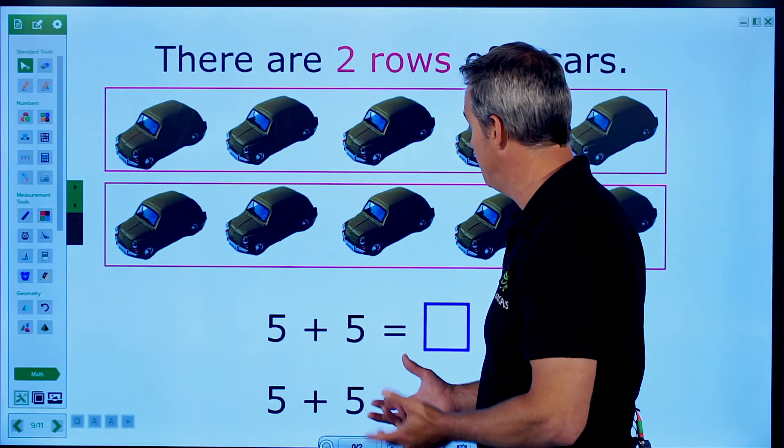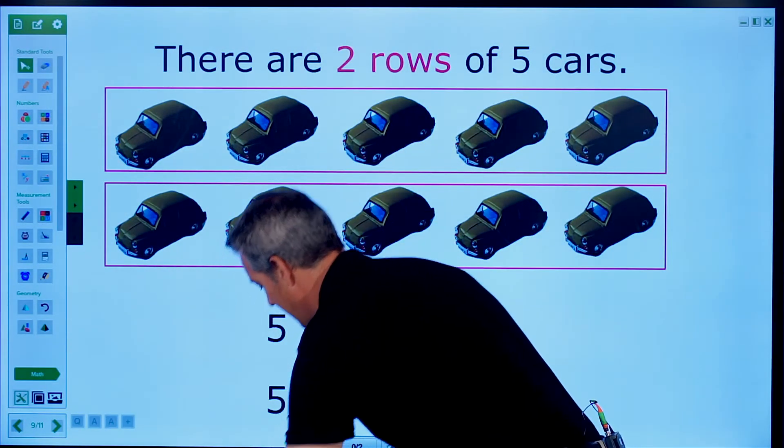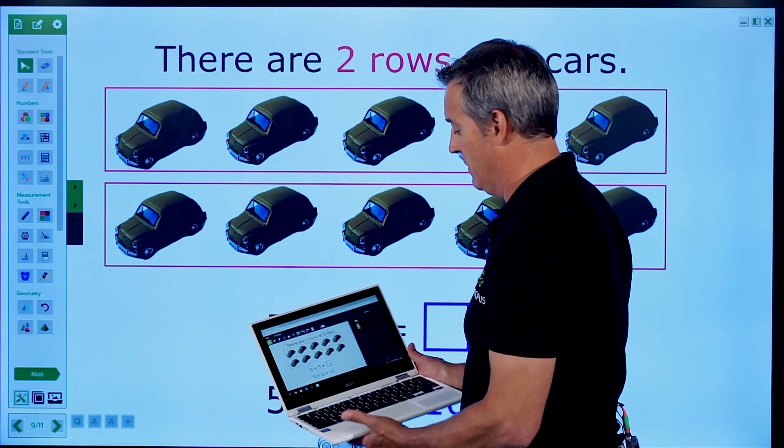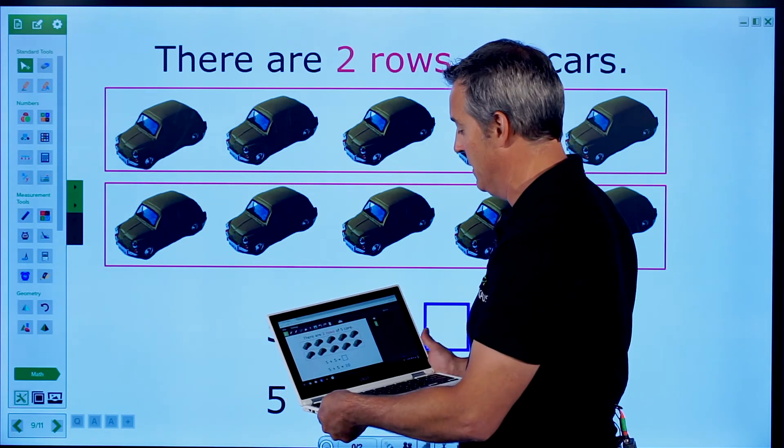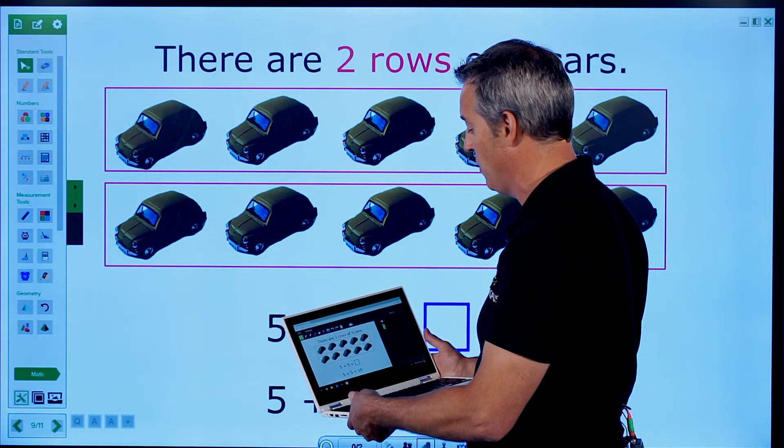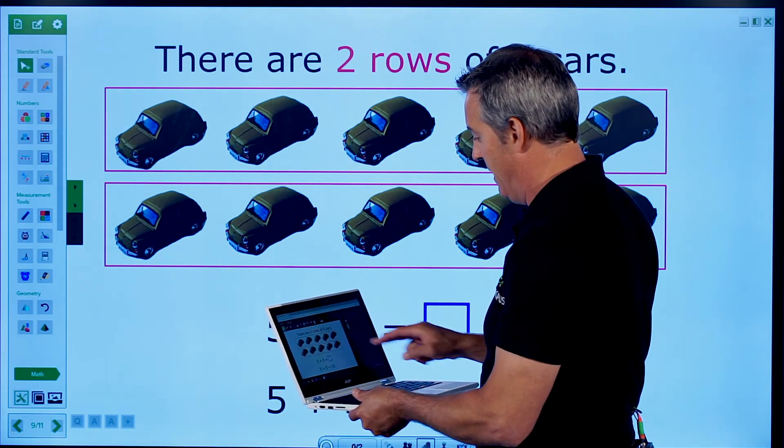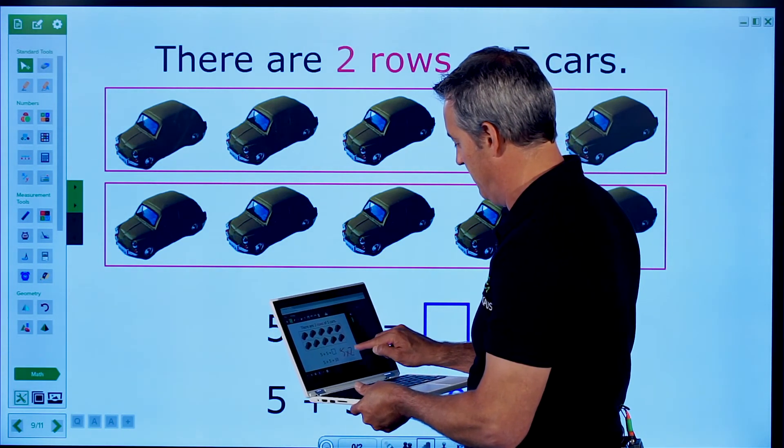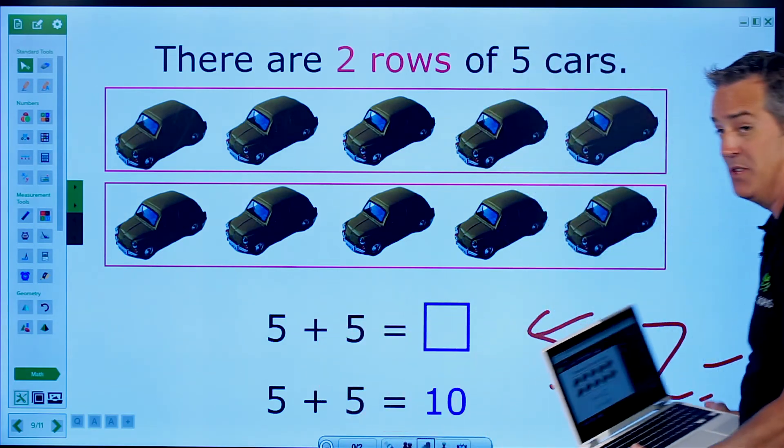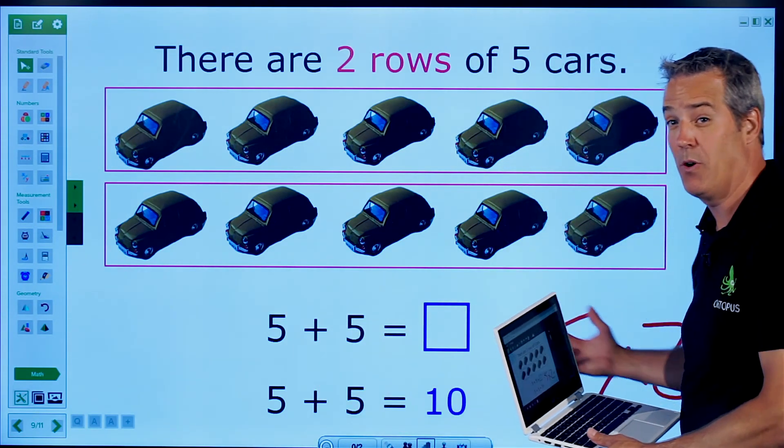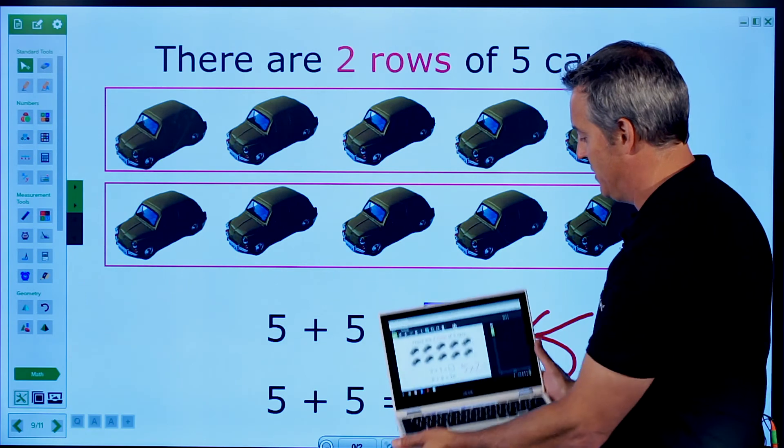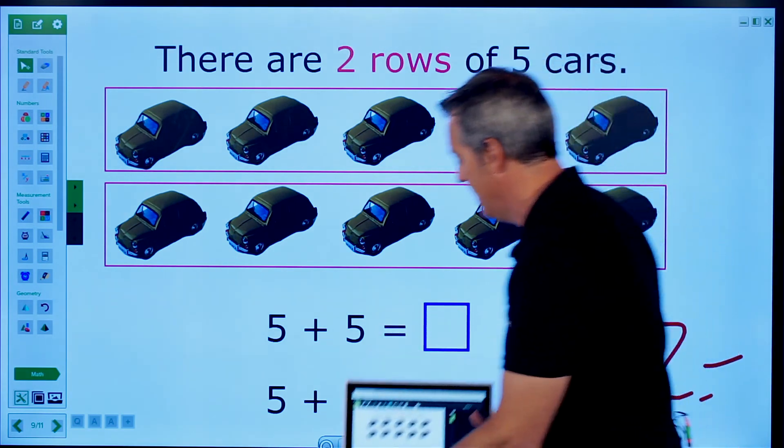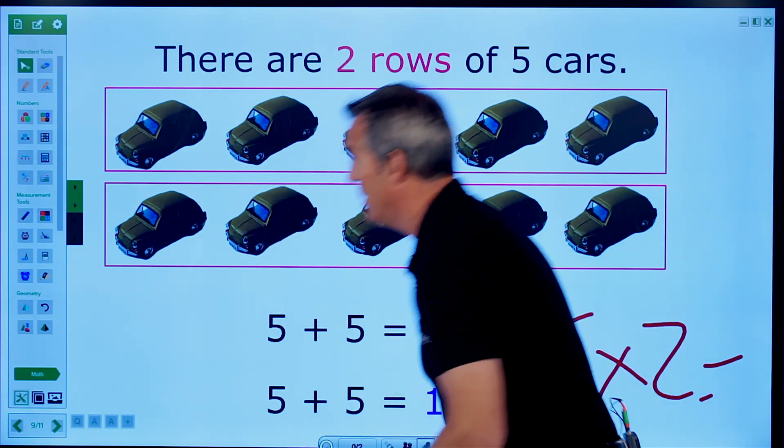I can have students interact with this at any point as well. So if I wanted students to give me another example, can you give me another example that would provide the same answer instead of two rows of five cars? They might say, you know, that five times two cars would give them the same answer. So they could have five rows of two cars or whatever. So my students can interact from their device, and we can have instant assessment and polling as well.